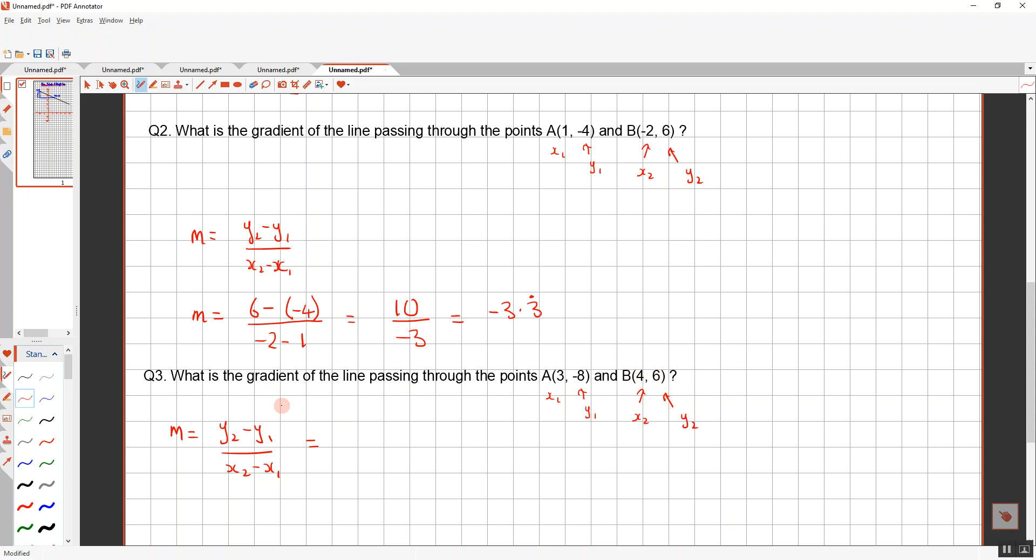Let's see how we got on. So, y2 take away y1. y2 is 6, take away y1, which is negative 8, divided by x2, which is 4, take away x1, which is 3. So, I end up getting 6 take away negative 8, you can do it on your calculator, 14. 4 take away 3 is 1. So our answer is just 14. Hopefully you got those. And I will post the worksheet onto the lessons for this week.